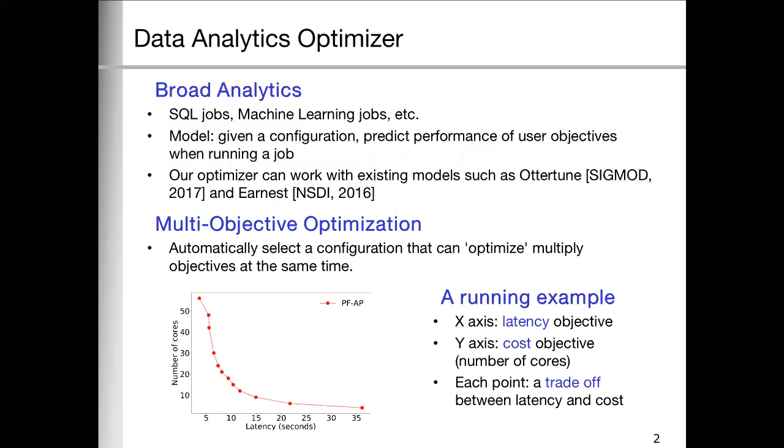We will use this running example throughout our presentation. In this example, the x-axis is the latency, the y-axis is the cost, or the number of cores. As we can see in this plot, each point represents a different trade-off between latency and cost. Different users may have different preferences. We will define the MO problem and its solution later on. For now, we can think that what we should do is to provide all these options to the user.